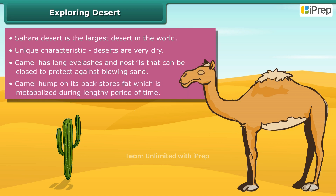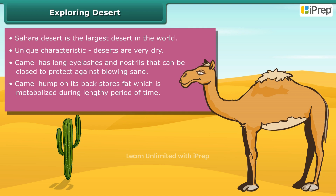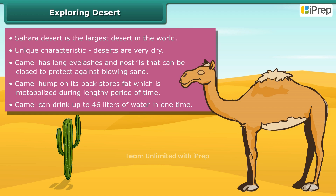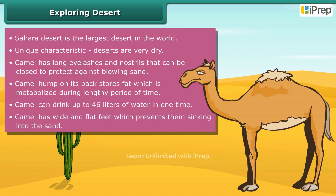A large hump on its back stores fat, which is metabolized during lengthy periods without food. Camels can drink up to 46 liters of water at one time and can live without water for a week. Wide and flat feet prevent the camel from sinking into the sand.